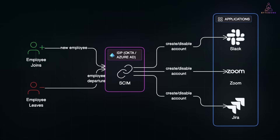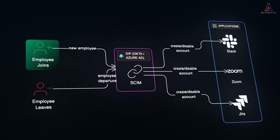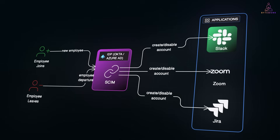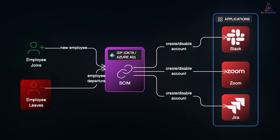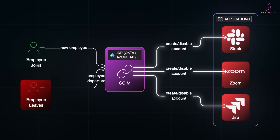For example, when a new employee joins, your IDP — say Okta or Azure AD — can use SCIM to automatically create their Slack, Zoom, and Jira accounts with the right roles. And when they leave the company, SCIM can remove or disable those accounts instantly, closing any lingering access. In other words, SCIM is the identity lifecycle plumbing that keeps your SSO setup in sync with reality.